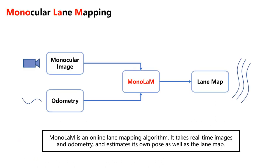This image illustrates how our proposed monocular lane mapping system works. The system takes a sequence of monocular images and odometry poses as input. Based on our proposed method, MonoLAM generates lane maps online while also allowing further optimization of the odometry poses.